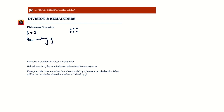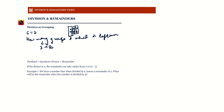If I have six marbles and divide into groups of two marbles each — these two marbles make one group, these two make another group, and these two make a third group — so in all I get three groups. That count of groups is called the quotient. And what is left over? There is nothing left over, so the remainder is zero.